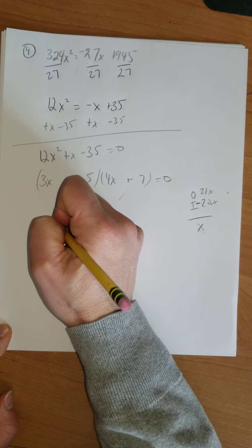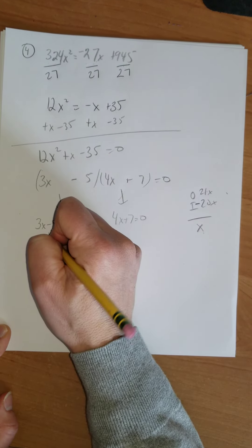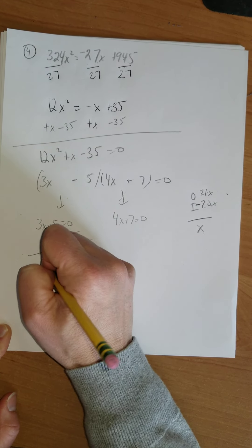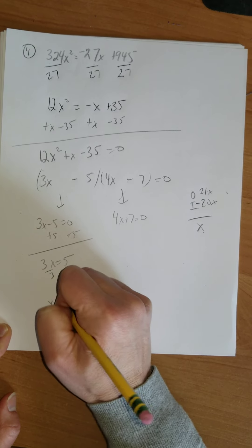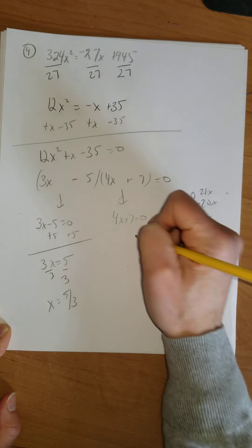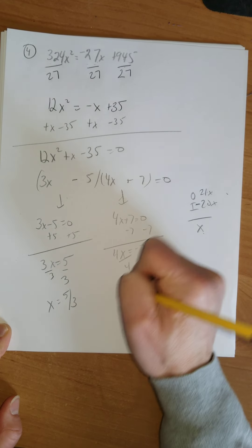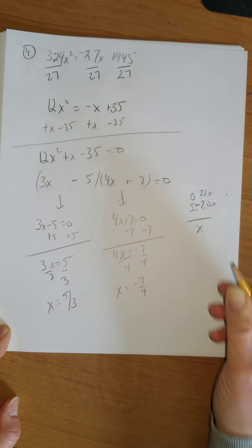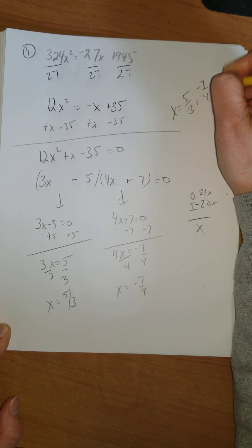So 3x - 5 = 0, or 4x + 7 = 0. Here, I'd add 5. Divide by 3. x is 5/3. And here, I'm subtracting 7. And those are my answers. So x is going to equal 5/3 or -7/4. So I'm feeling good about that.